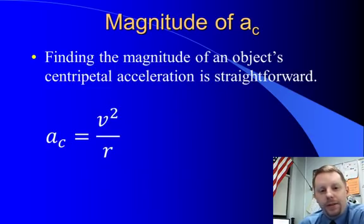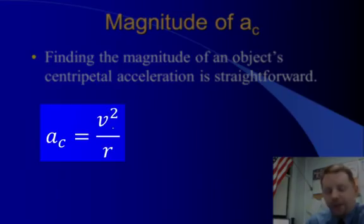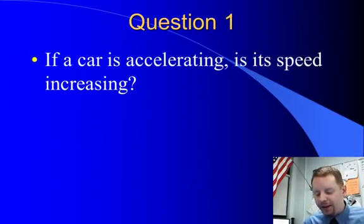Now, the magnitude of the centripetal acceleration can be found from a fairly straightforward formula. This centripetal acceleration is equal to the square of the object's velocity divided by the radius of the circle it's turning. Let's take a look and see if we can't apply this.